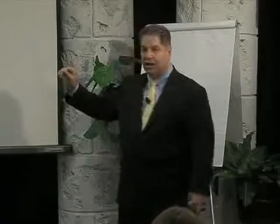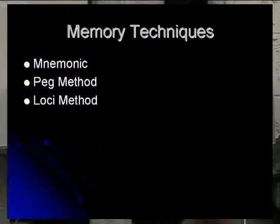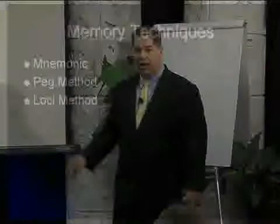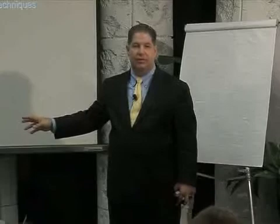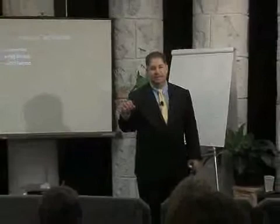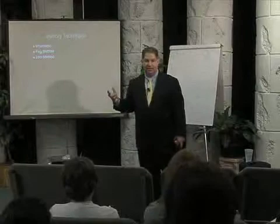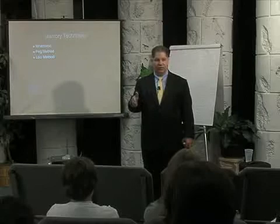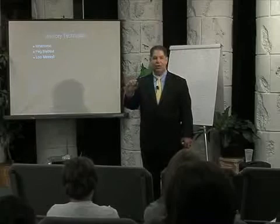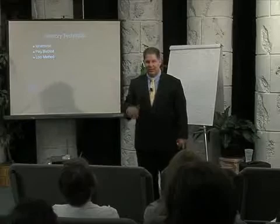So when we talk about memory, we're going to talk about the three major types of memory tools. One is a thing called a mnemonic, another is a peg method, and then the loci method. Now, I will tell you that all of these have been around for thousands of years. You'll hear key phrases frequently that go back to the beginning — 'in the first place,' 'once upon a time.' Those are all memory tools we used to pass down whole books from one generation to the next. So with that, let's get right into this.